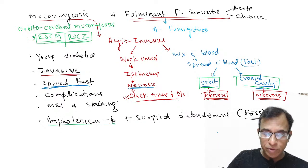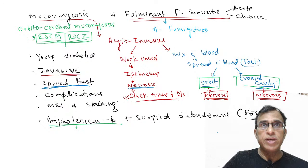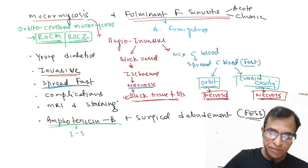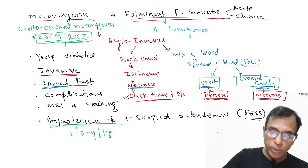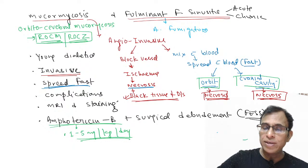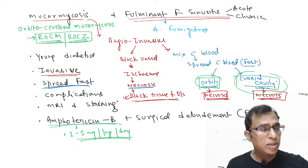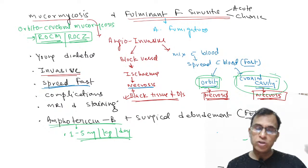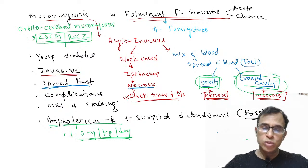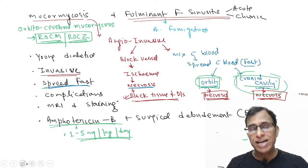The drug of choice is very important, and the dose of Amphotericin B could be an important MCQ. It is 1 to 5 mg per kg body weight per day. However, for orbital spread and cranial spread, the dose and quantity will increase.